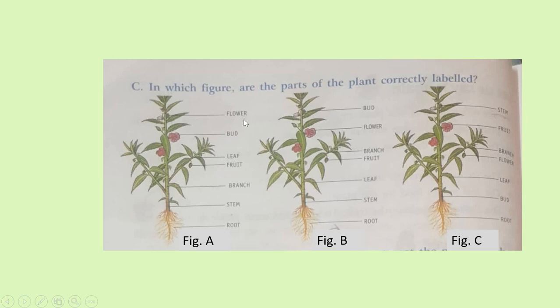In figure A, you see, is it a flower? No. And this is not a bud? Wrong. In C, this is fruit. Is it a fruit? No. Wrong. So, and this is a bud? No. So many are wrong in A and C.